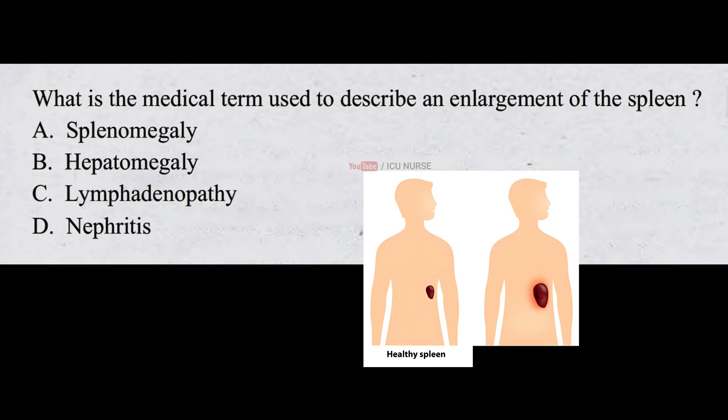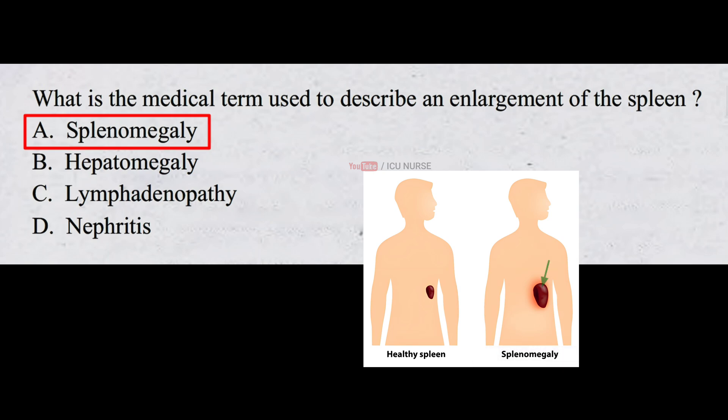What is the medical term used to describe an enlargement of the spleen? A. Splenomegaly B. Hepatomegaly C. Lymphadenopathy D. Nephritis. The correct answer is A. Splenomegaly. The enlargement of the spleen is called splenomegaly.